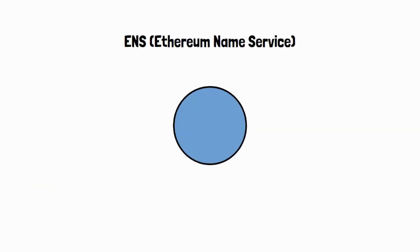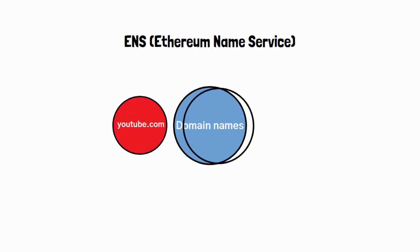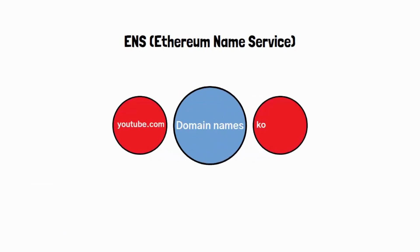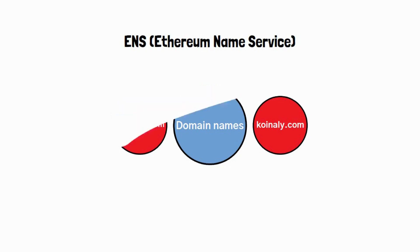You are probably familiar with domain names like YouTube.com and Koinali.com. These domain names have been around for a very long time; however, the ENS is here to reshape what we know as domain names.